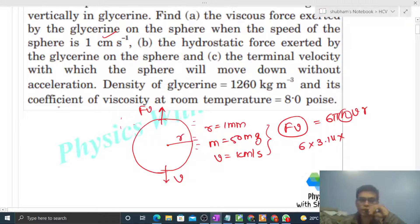Just put the values: 6π times η, the coefficient of viscosity, which is given as 8 poise. You have to convert it to SI unit by dividing by 10, so it becomes 0.8 in deca poise.